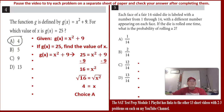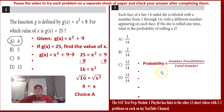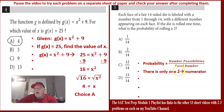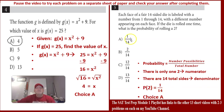Number 5: a fair 14-sided die is labeled with numbers 1 through 14 with a different number on each face. If the die is rolled one time, what's the probability of rolling a 2? The probability of a simple event is the number of favorable possibilities over the total number in the sample space. There's only one 2 on the die, and there are 14 total sides, so the answer is 1/14, choice A.